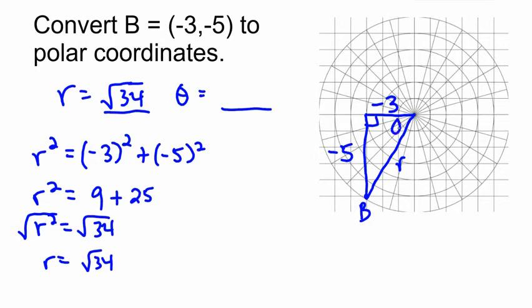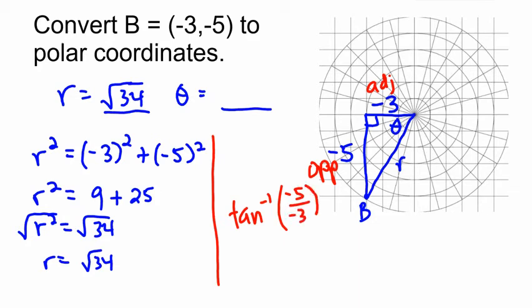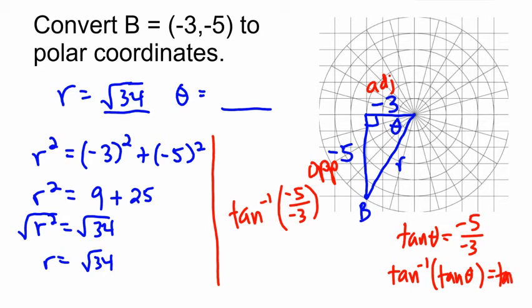What about the theta, though? How do we figure out this angle right here? So we're given the opposite side, and we're given the adjacent side. So if we're going to use trig to figure this out, we can do inverse tangent of opposite over adjacent. And if you're not sure where I got this, let me back up just a couple steps. We do tangent of theta equals opposite over adjacent. And then if you're going to cancel out tangent, to cancel that out, you're going to do the inverse tangent of both sides. And then we end up with theta equals tangent inverse of negative 5 over negative 3.